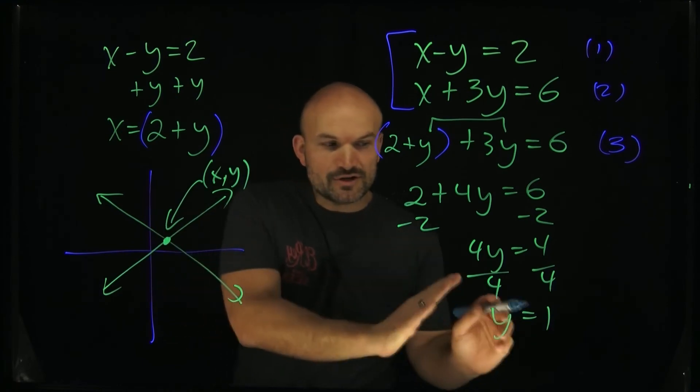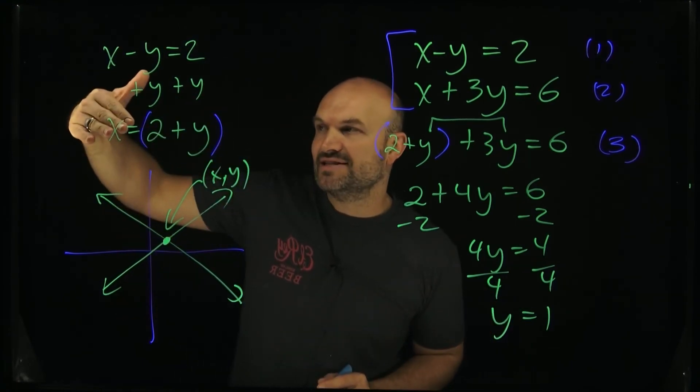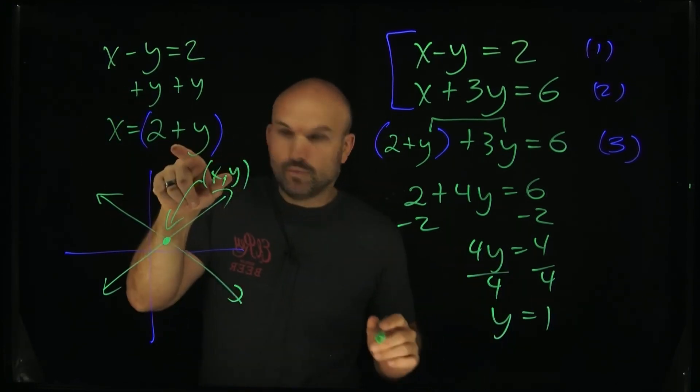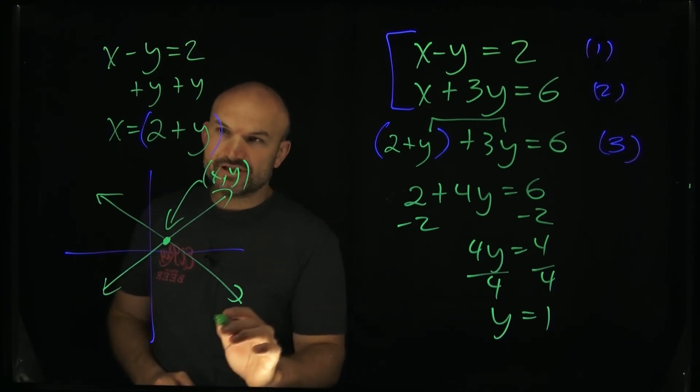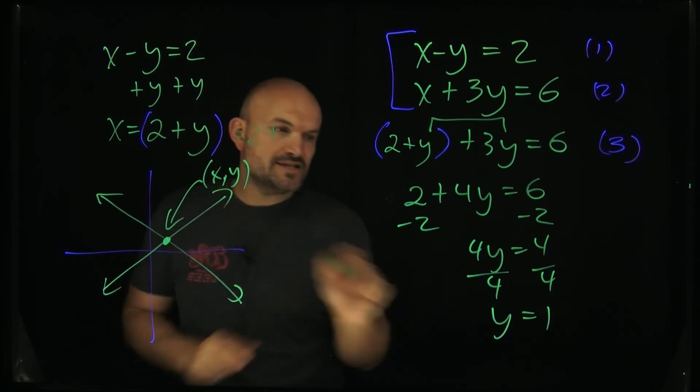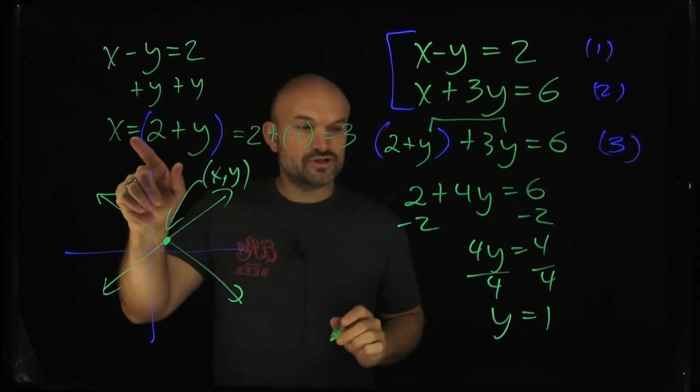So in this example, we have y is one. Now, the cool thing about doing this when you're using substitution is we've already set this equation equal to x. So if I know y is now equal to one, if I want to solve for x, all I simply need to do now is just go ahead and plug in 2 plus what y was, which was equal to 1. So therefore, x is now equal to 3.